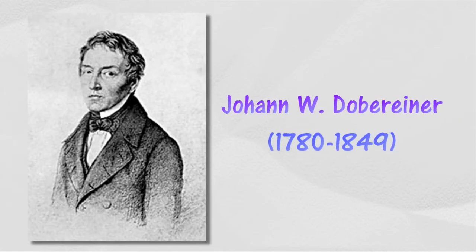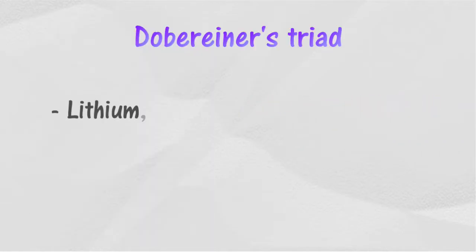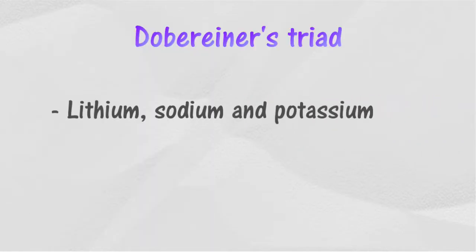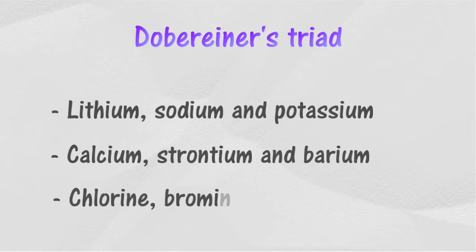Johan Wolfgang Döbereiner classified three elements with similar characteristics into groups known as triads. Lithium, sodium, and potassium form one triad; calcium, strontium, and barium form one triad; and chlorine, bromine, and iodine form one triad. He suggested the existence of a relationship between chemical characteristics and the mass of element atoms.